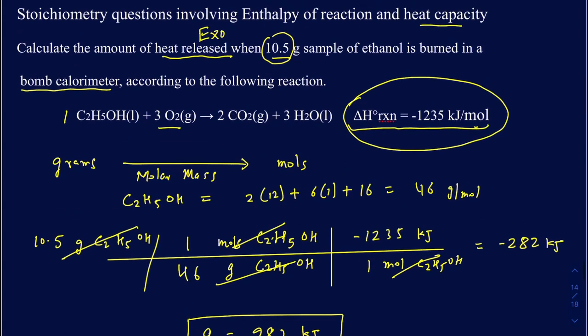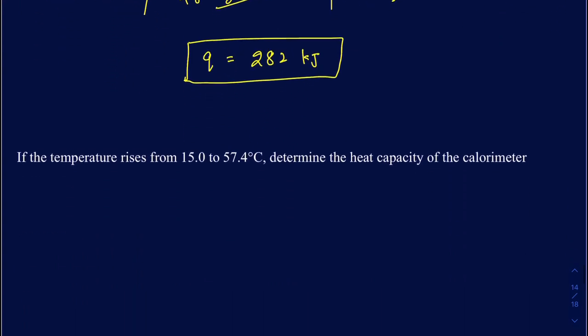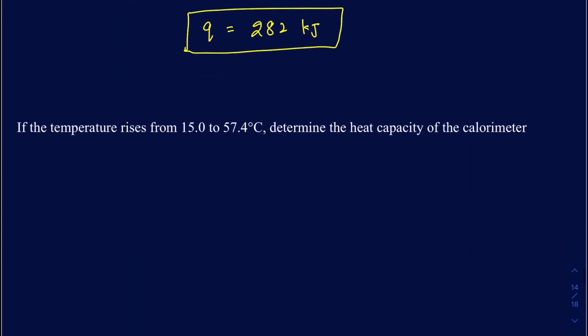The second part of the question says, what's going to be the heat capacity of that calorimetry? Okay, well, it tells us the temperature rises from 15.0 to 57.4, and you have to determine the heat capacity of that calorimetry. Well, all that energy that's released by burning the ethanol is being absorbed by the calorimetry, so that's how you want to look at it.